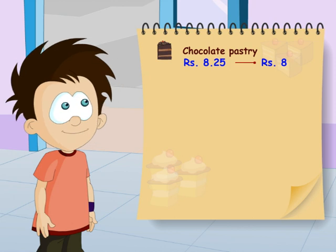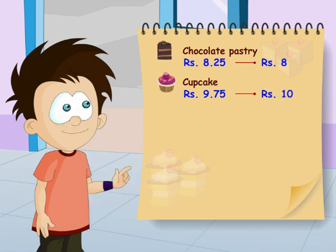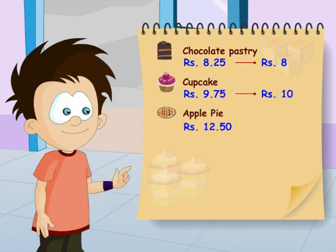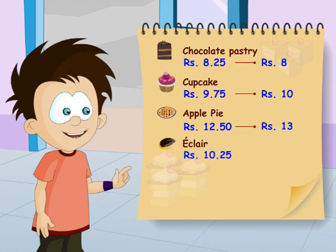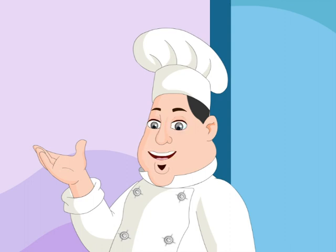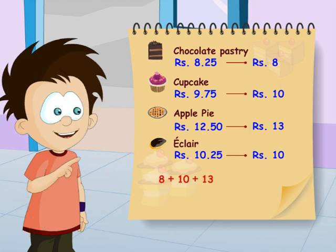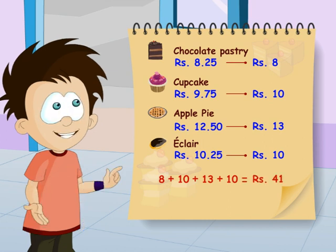The cupcake is for 9 rupees 75 paise. Now 75 is greater than 50, so I'll round it off to 10 rupees. The apple pie is 12 rupees and 50 paise. I'll round that off to 13 rupees. And this eclair is for 10 rupees 25 paise, so I'll round that off to 10 rupees. Now you can easily add these numbers. 8 plus 10 plus 13 plus 10 is rupees 41.